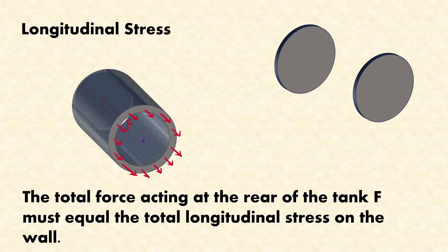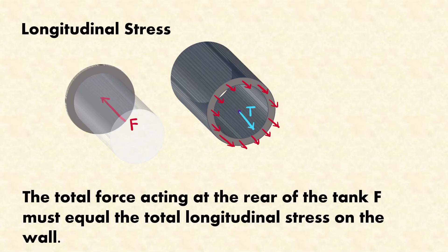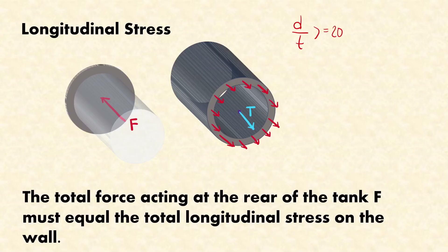The total force F acting at the rear of the tank must equal the total longitudinal stress on the wall. The stresses on the walls look like this. If the wall thickness t is sufficiently small compared to the diameter of the vessel, these stresses are almost uniform throughout the wall thickness. In simple terms, if D/t ≥ 20, the stresses between the inner and outer surfaces will vary by less than 5%. For thin-walled cylinders, the cross-sectional area of the wall can be approximated by the mean circumference times the thickness.